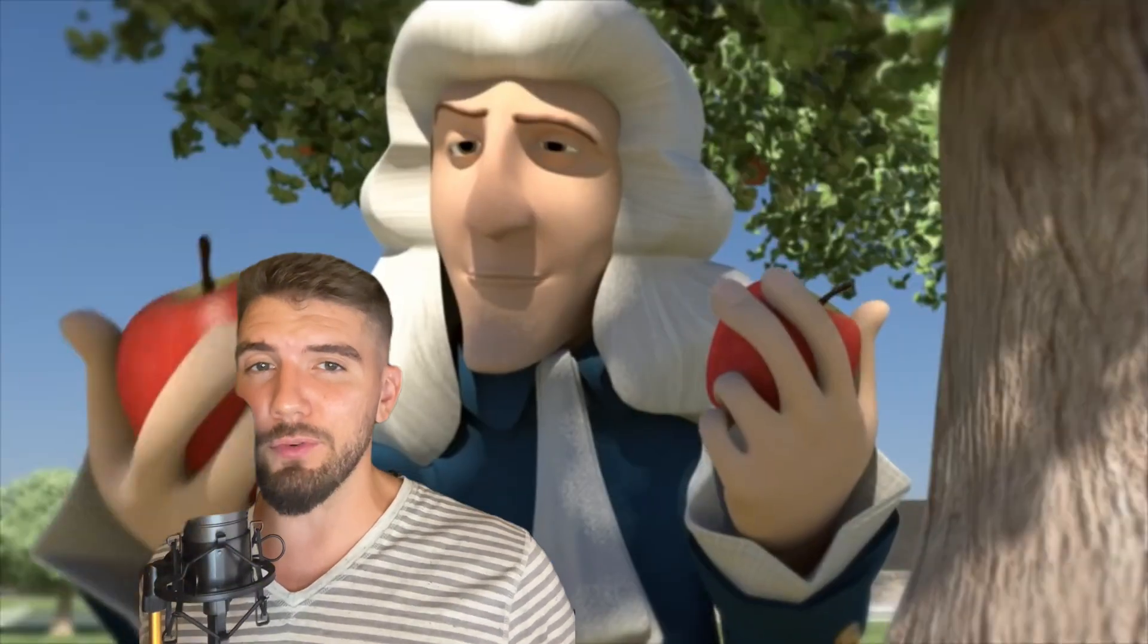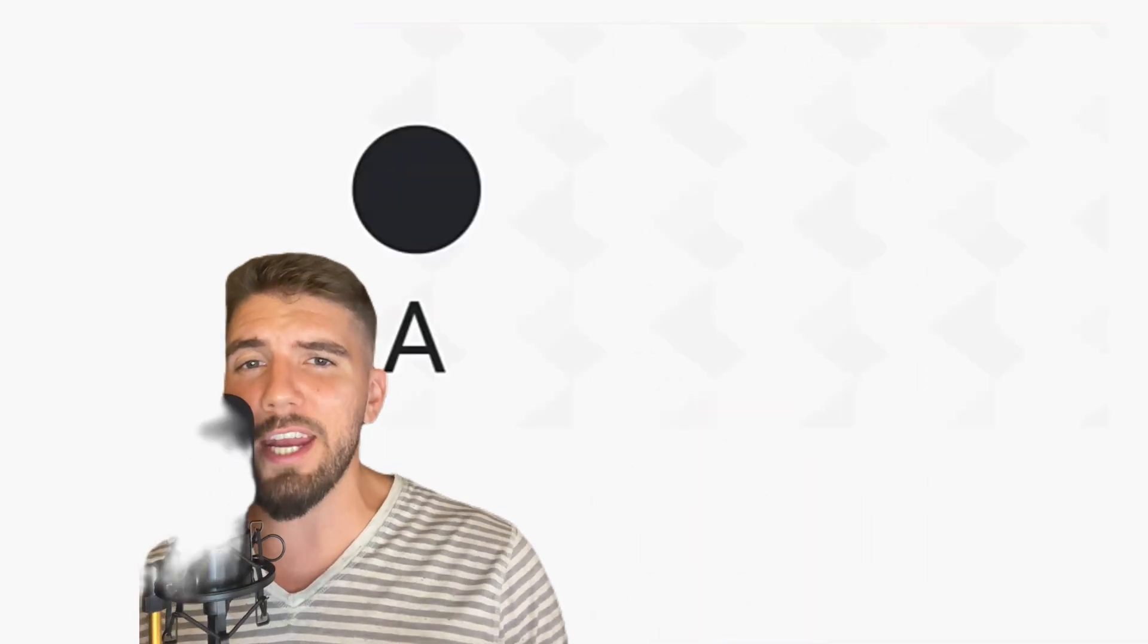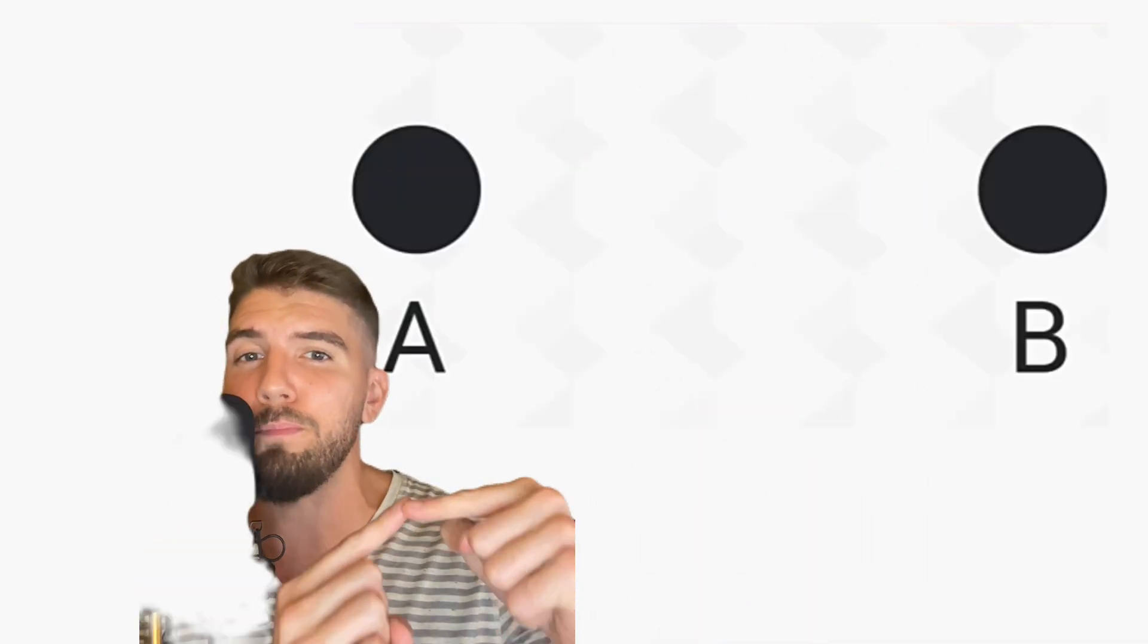When Isaac Newton first came up with his idea of gravity, he summarized it into a scientific law. According to this model, gravity was a force that instantaneously pulled any two objects in the universe towards each other based on their mass.